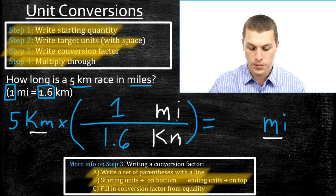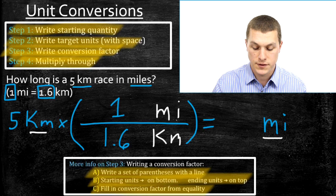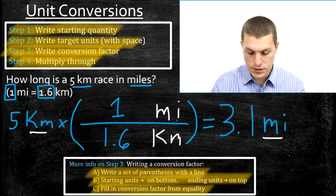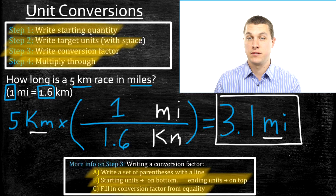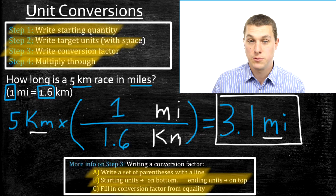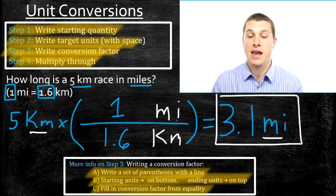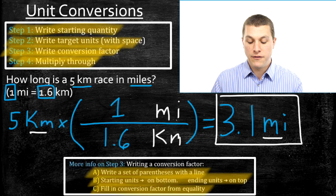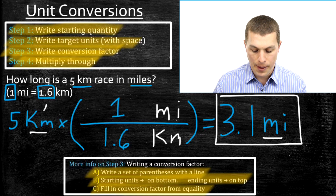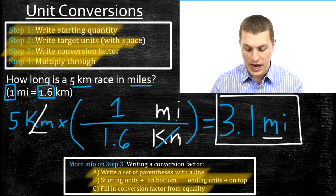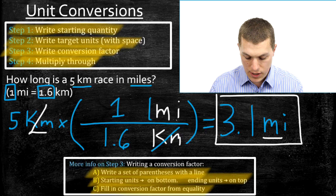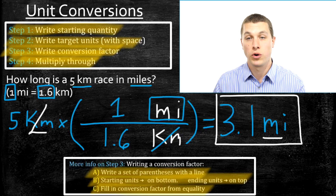Now we're basically done. The last step is to multiply through: five kilometers times one, divided by 1.6. When we plug that into a calculator we get 3.1. So 3.1 miles is the same as five kilometers — if you've run a 5K, you ran 3.1 miles. It's important to remember we're just expressing the same distance with a different unit. This process works because kilometers on top at the start cancels with kilometers on the bottom of the conversion factor — just like dividing five by five in algebra. We've gotten rid of kilometers and we're left with just miles.